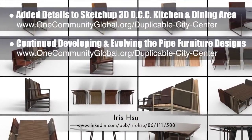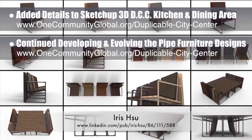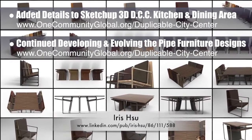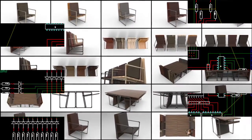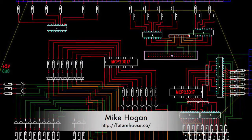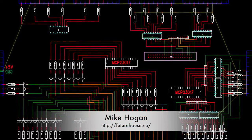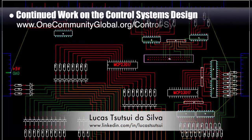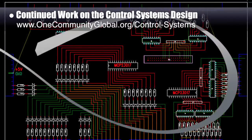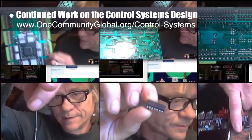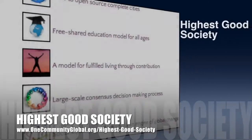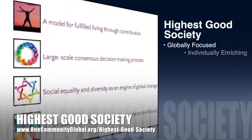Ira Sue, industrial designer, continued finalizing the pipe furniture design renders for the duplicable city center library. The new renders show the variety of different combinations of wood types, pipe types, and fabrics researched and determined to be quality options for these designs. Behind the scenes, Mike Hogan, automation systems developer and business systems consultant, and Lucas Tutsui da Silva, fourth-year computer engineering student, continued work on the control systems design. Here are pictures of Mike talking about different components, how they will connect and fit into the control panel, and ways to save space.